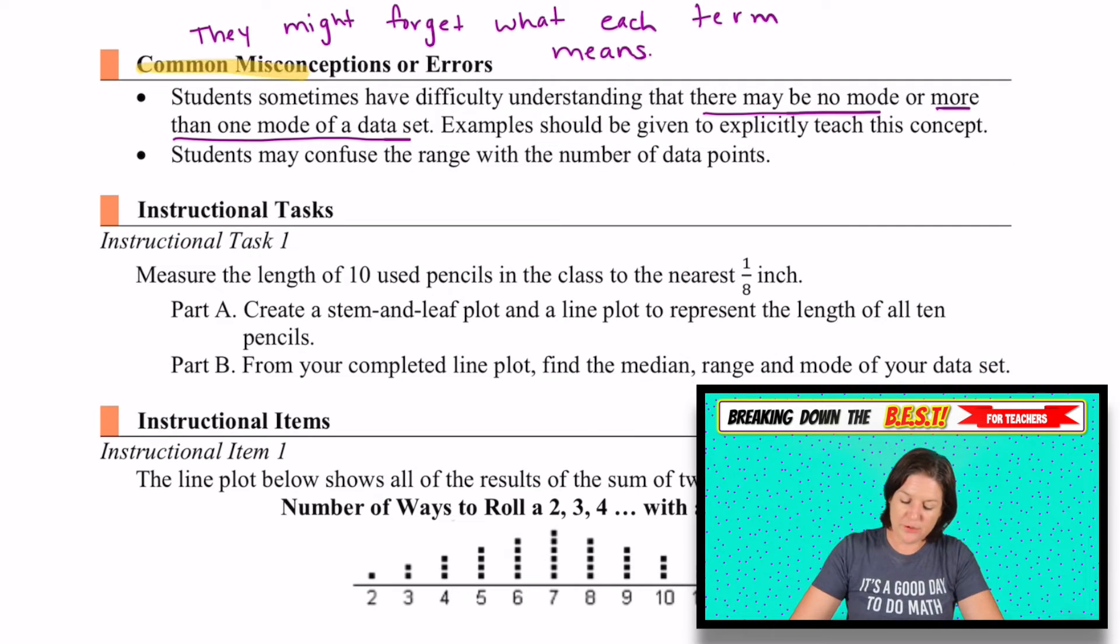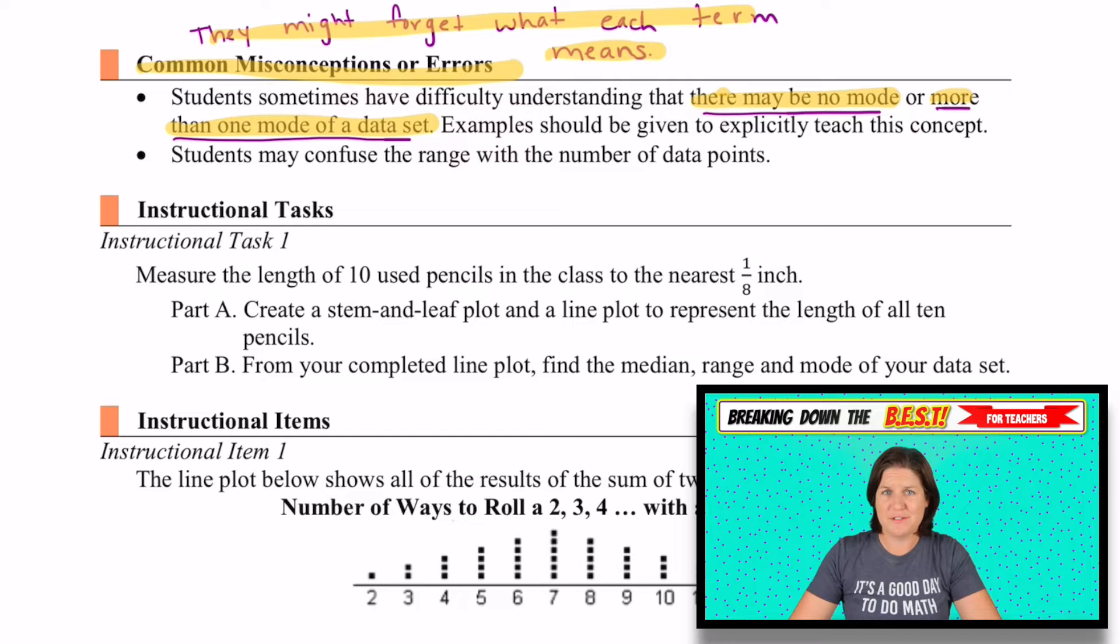Here they identify what the range is, subtracting the least value from the greatest value in a set. The mode is finding the value that occurs the most often. And the median is finding the value of the middle of the set. The most important thing is that the first step is to put this data in ascending order, going from least to greatest. Common misconceptions or errors: there may be no mode or more than one mode. And they might forget what each term means.